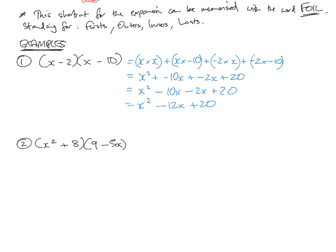So we did the firsts x times x, outers -10 times x, inners -2 times x, and lasts -2 times -10. That's a basic example. Now let's try a more complicated one. Instead of doing every step, I'm going to skip the first one and just say the answers, and this is probably what you should try to get to.